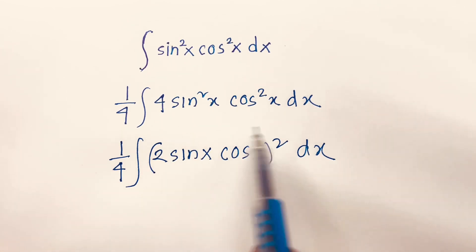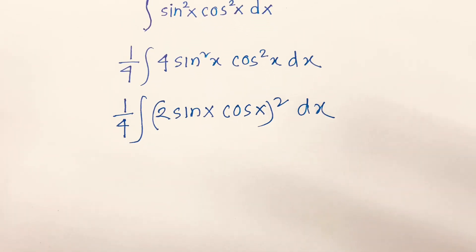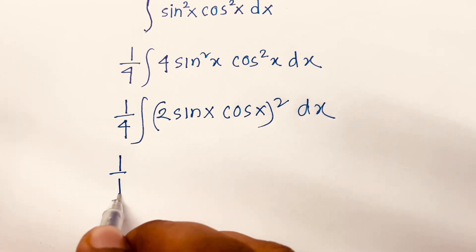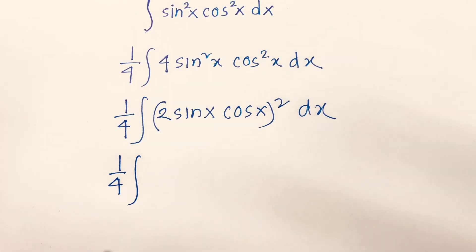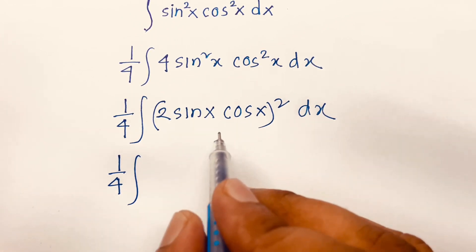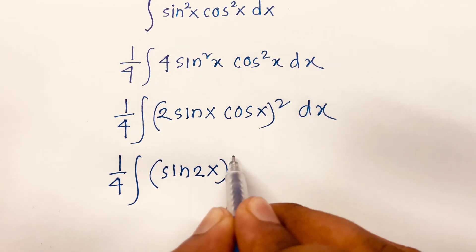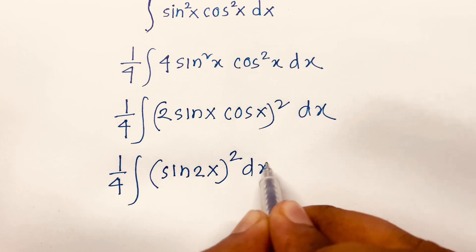Because of that, 2 square is equal to 4 and sine square x is equal to sine square x and cos square x is equal to cos square x. Then, I can say 1 over 4 integral of, we know that the trigonometric rule 2 sine x cos x is equal to sine 2x. So, I can say here is sine 2x square dx.